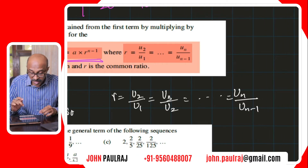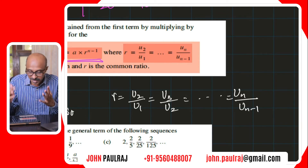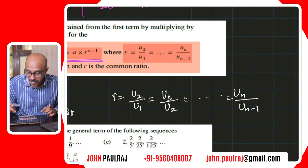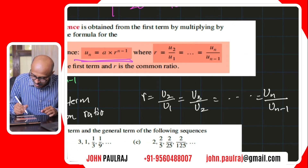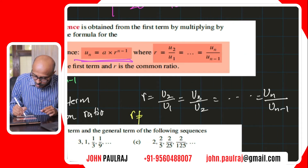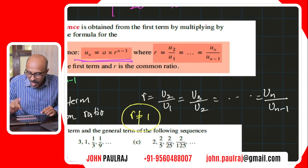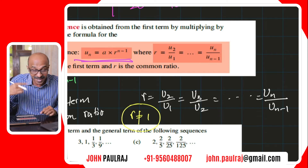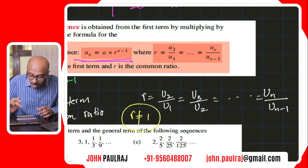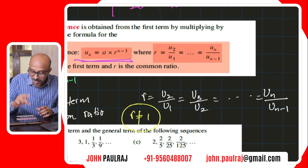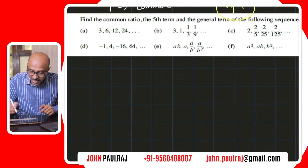One condition: r can be a positive value, a negative value, a fraction, or a decimal, but r cannot be equal to 1. If you know why, please mention that in the comments below. I'll reveal the reasoning in another video, but for now I want you to think about it.